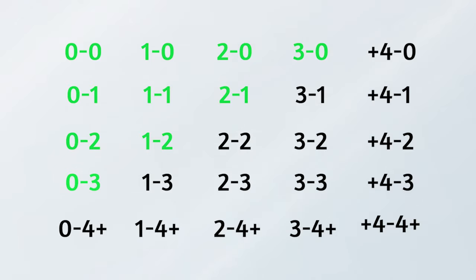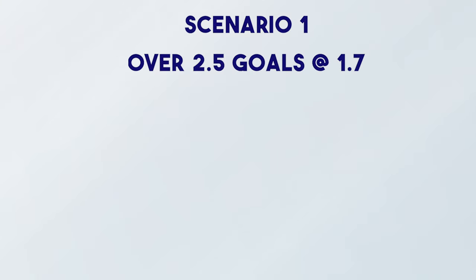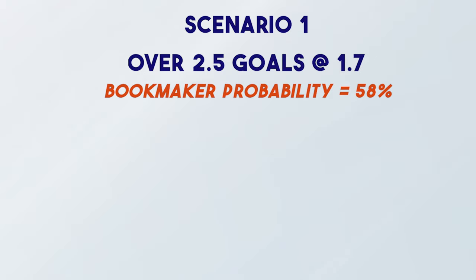By adopting this approach you are protecting yourself from the unpredictability of football. The odds on over 1.5 and under 3.5 are going to be worse than the over/under 2.5 market, but let's look at an example. Say the line for over 2.5 goals in a game is 1.7 — converting that into a probability, the bookmakers are saying there is a 57% chance of over 2.5 goals occurring. Let's say you've done your own analysis using the Poisson distribution to calculate expected goals.